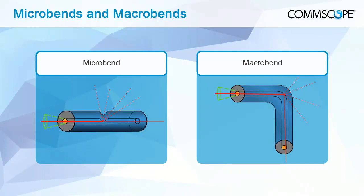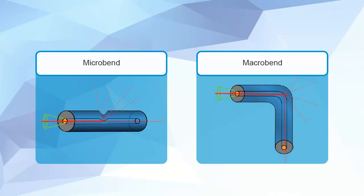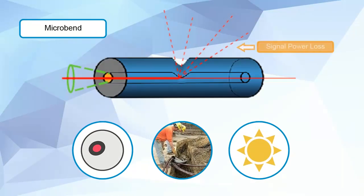Micro-bends and macro-bends are common problems in installed cable systems because they can induce signal power loss. Micro-bending occurs when the fiber core deviates from the axis and can be caused by manufacturing defects, mechanical constraints during the fiber laying process, and environmental variations in temperature, humidity, or pressure during the fiber's lifetime.